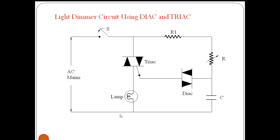This is the connection diagram of the light dimmer circuit using DIAC and TRIAC. It mainly consists of a lamp, TRIAC, and DIAC. Along with these, we also have a rheostat — a variable resistance — a capacitor, a fixed resistor R1 for safety purposes, and a switch connected to the single-phase AC mains circuit.